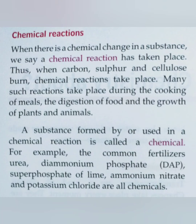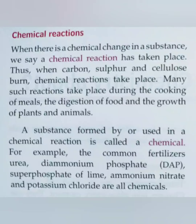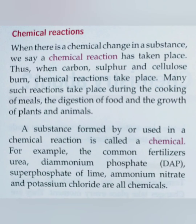We will move on to the second page now. When there is a chemical change in a substance, we say a chemical reaction takes place. When carbon, sulfur, and cellulose burn, chemical reactions take place. Many chemical reactions happen in our day-to-day life, like during cooking, digestion of food in our body, or the growth of plants and animals — everything involves chemical reactions. A substance formed by or used in a chemical reaction is called a chemical.